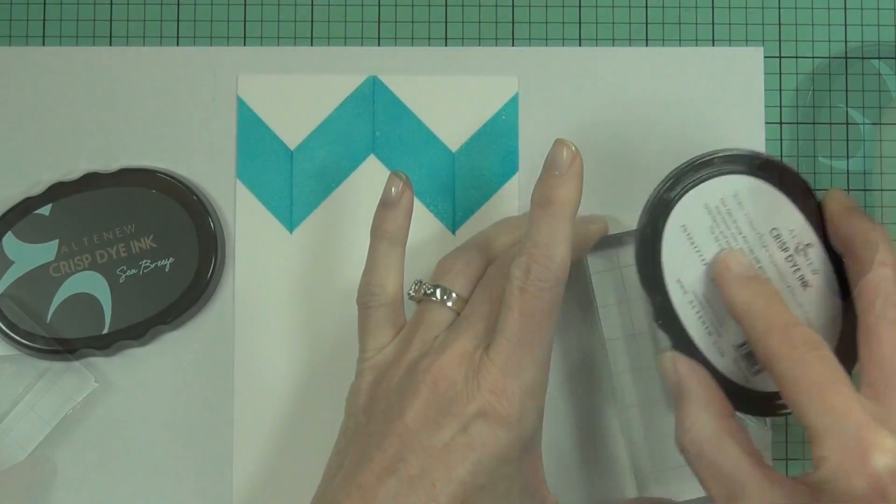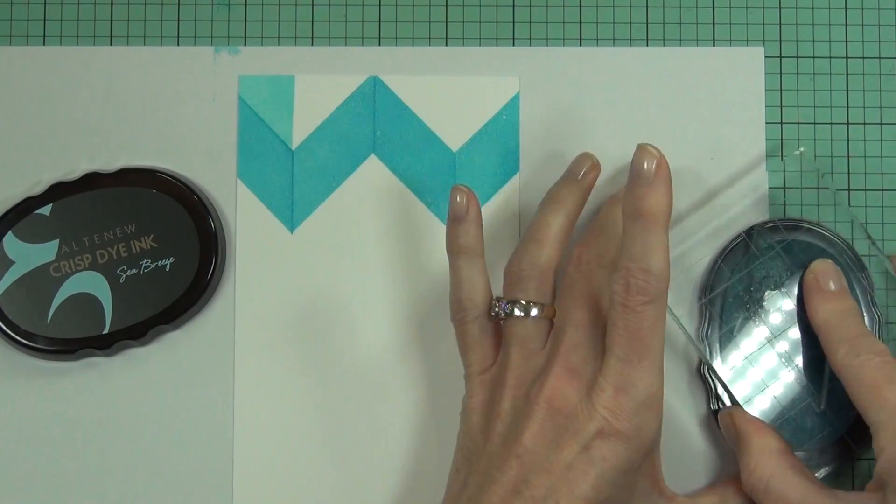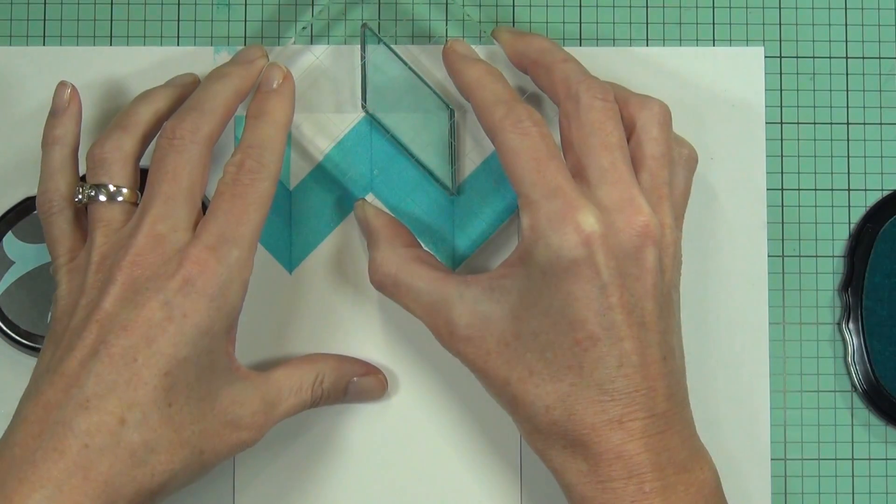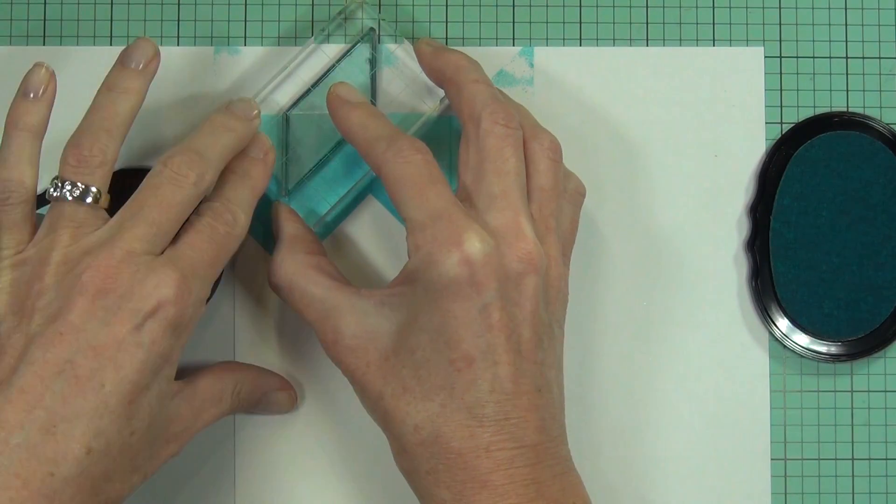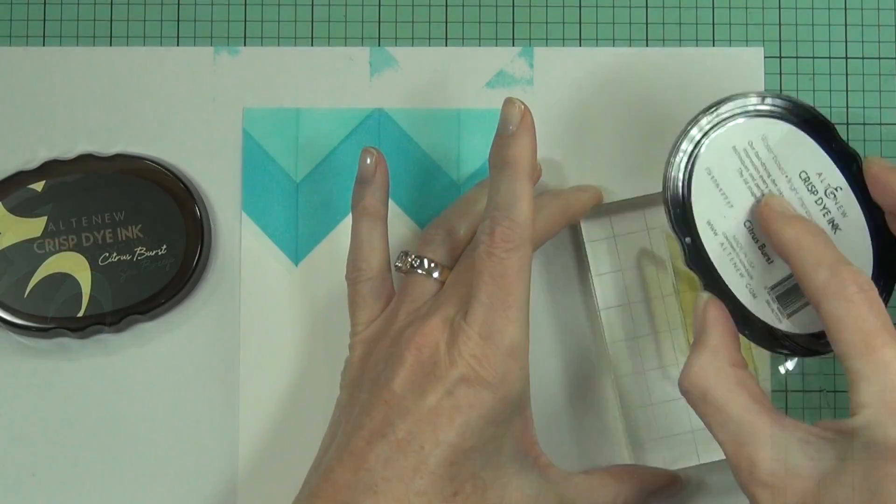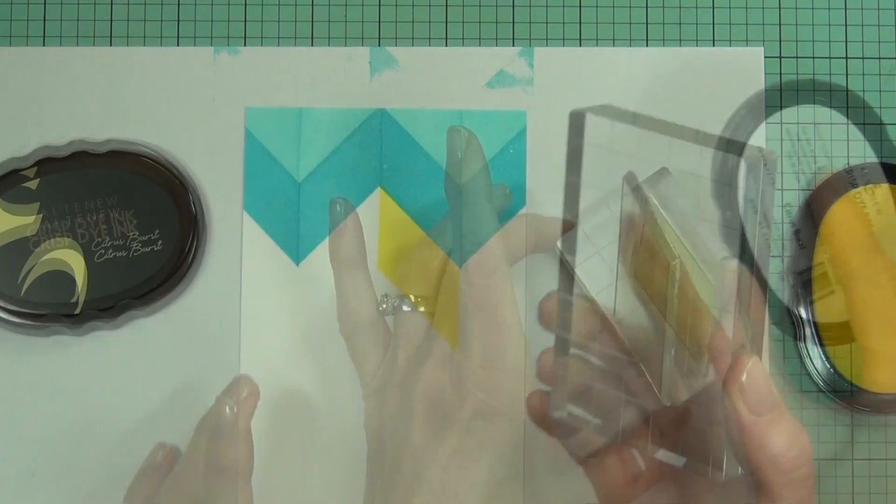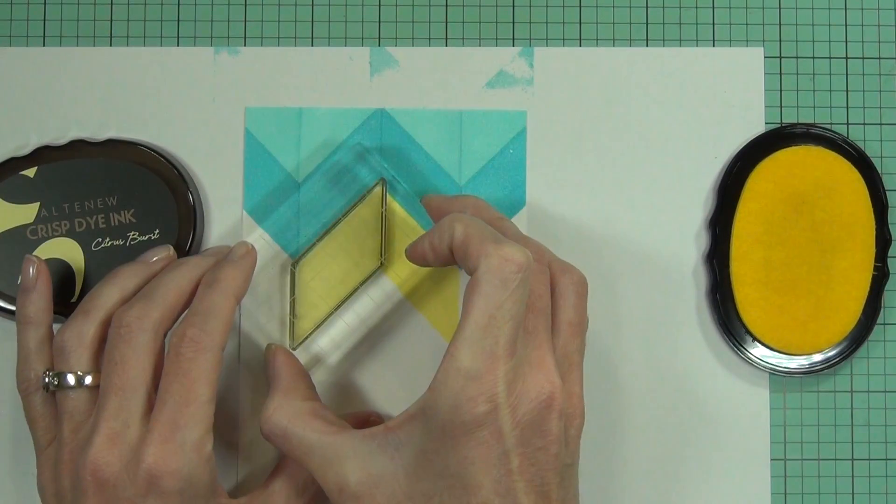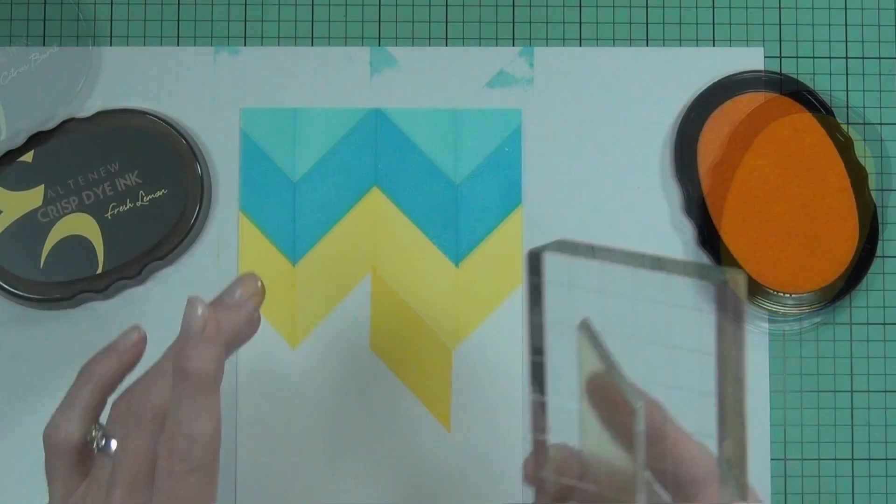I've chosen basically the two lightest colors in each of the three color ranges that were released. This is the sea breeze, which is the lighter blue, and then the turquoise, and then the two yellows I'm using.